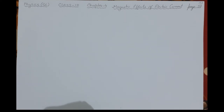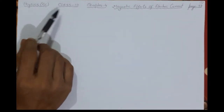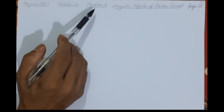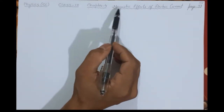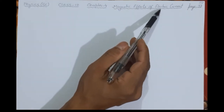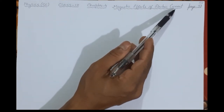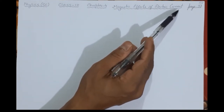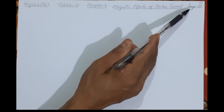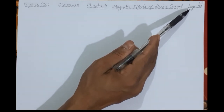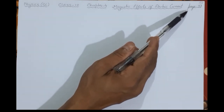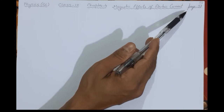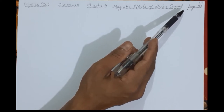Welcome viewers to the SD Online Classes. This is Physics Class 10, Chapter 4: Magnetic Effects of Electric Current, from the MBAC textbook. The page number in your textbook will be 97. This is the first lecture for Chapter 4.